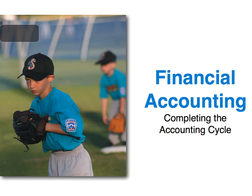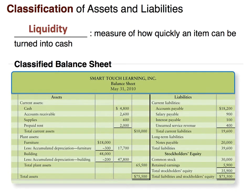Welcome everyone. In this video on the accounting cycle we're going to be looking at the classification of assets and liabilities on the balance sheet, as well as some measures of liquidity. Let's start with a quick definition of liquidity. Liquidity measures how quickly an item can be turned into cash.